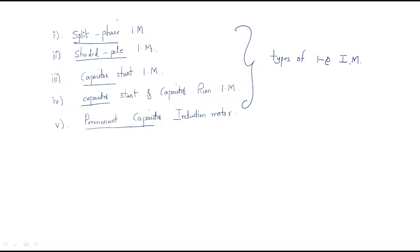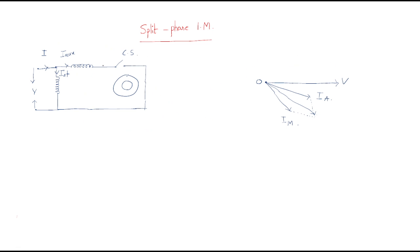Without these connections — split phase, shaded pole, and capacitor connections — the motor cannot be self-starting. To make it self-starting, these modifications must be used for the single phase induction motor.